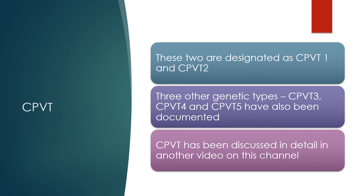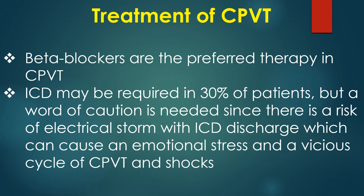These two are designated as CPVT1 and CPVT2. Three other genetic types — CPVT3, CPVT4, and CPVT5 — have also been documented. Beta blockers are the preferred therapy in CPVT. ICD may be required in 30% of patients, but caution is needed since there is a risk of electrical storm with ICD discharges, which can cause emotional stress and a vicious cycle of CPVT and shocks.